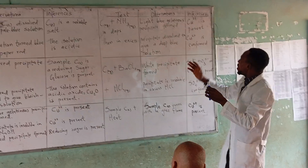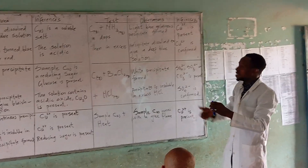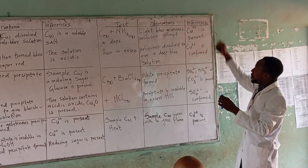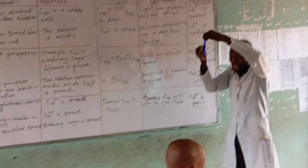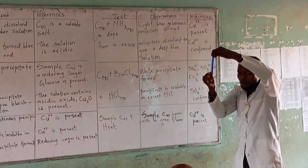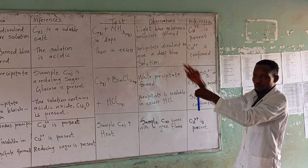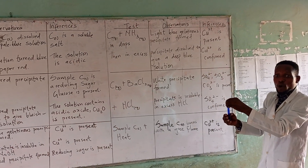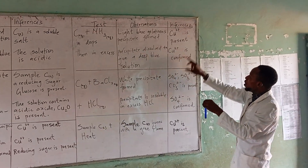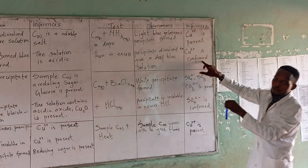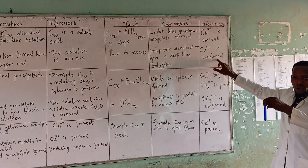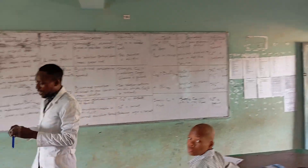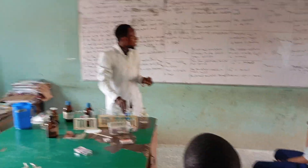The light blue gelatinous precipitate formed is soluble and dissolves in excess aqueous ammonia to give a deep blue solution. For your inference: Cu²⁺ is present. When you have this deep blue solution and it is soluble in excess aqueous ammonia, it is a complementary test for copper. So we confirm that Cu²⁺ is present. We use aqueous ammonia for the confirmatory test of Cu²⁺.